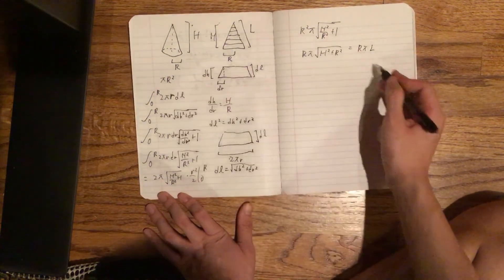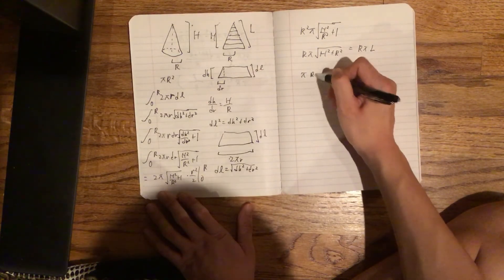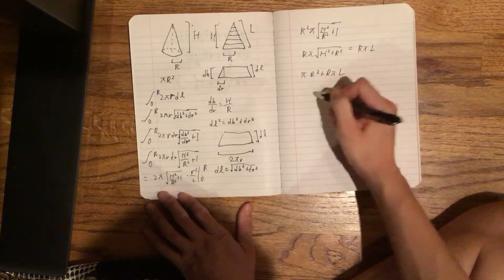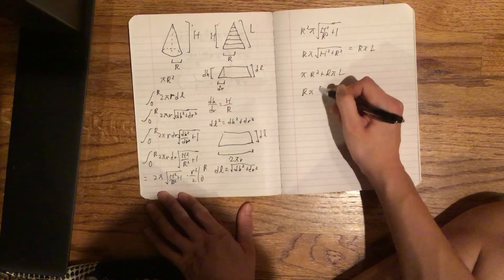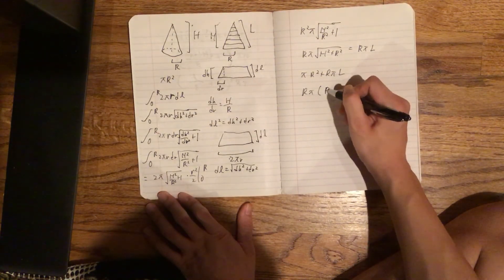Now we sum the base and lateral surface together. πr² + rπl. We factor out rπ and we get πr(r + l). So that is the surface area of a cone.